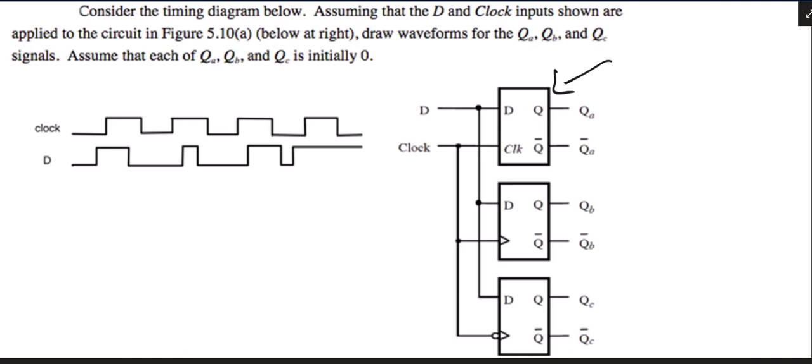Now this top one is a gated D latch. And I don't know if you remember how those work from 2741, but I'll show you. Those get to change the entire time the clock is 1. This one is positive edge triggered. And this one is negative edge triggered.